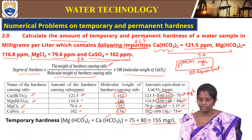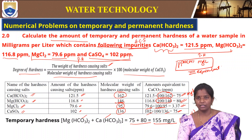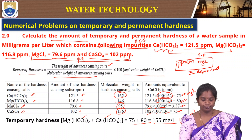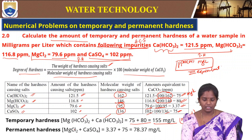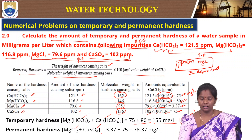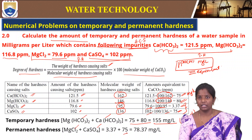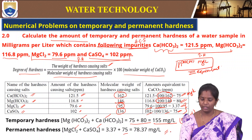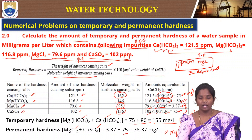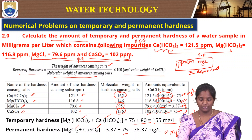Temporary hardness is calculated from bicarbonates of calcium and magnesium: 75 + 80 = 155 mg/L. Permanent hardness is due to chlorides and sulphates of magnesium and calcium: 83.79 + 75 = 78.37 mg/L. These are the hardness concentrations present in this particular water sample.